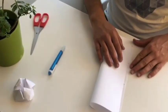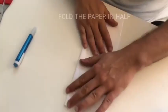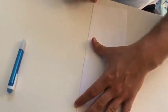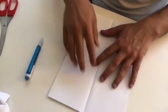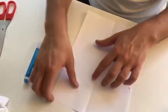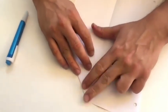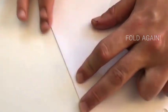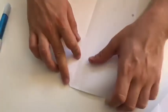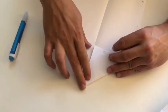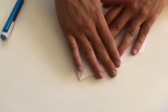We need to fold the paper in half as you can see. So we have the folded sides. Then we fold again. So we have one flap and a second flap.